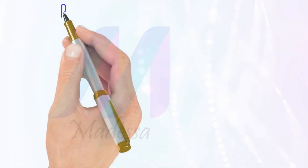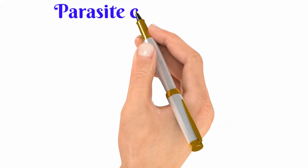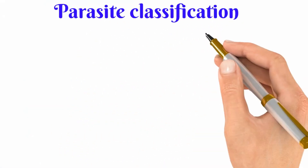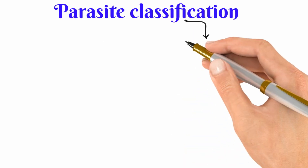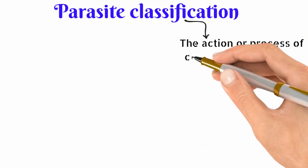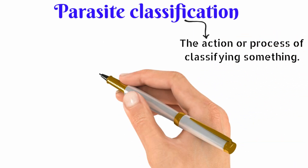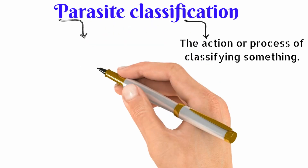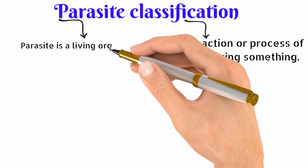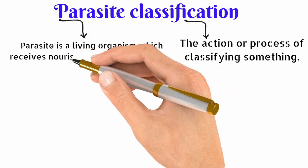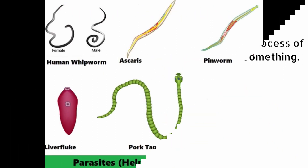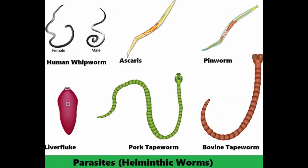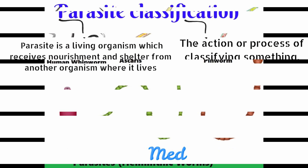Hello friends, welcome back. In this video we are going to talk about parasite classification, or types of parasite. Classification is the action or process of classifying something. A parasite is an organism which receives nourishment and shelter from another organism. Here we can see various types of the parasite.